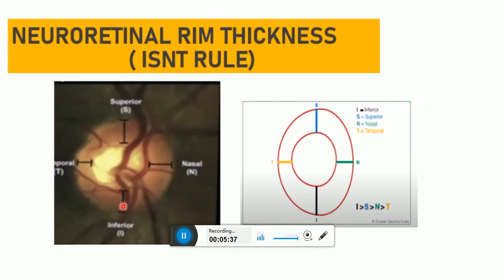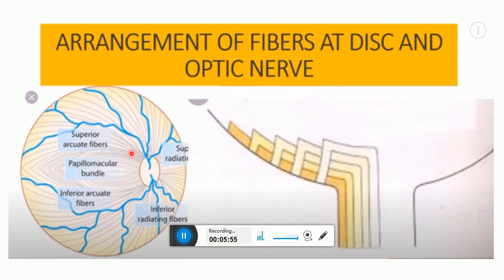Axons from the larger temporal retina are organized into superior and inferior arcuate fibers by the horizontal raphe, and enter the disc at the superior and inferior poles respectively.